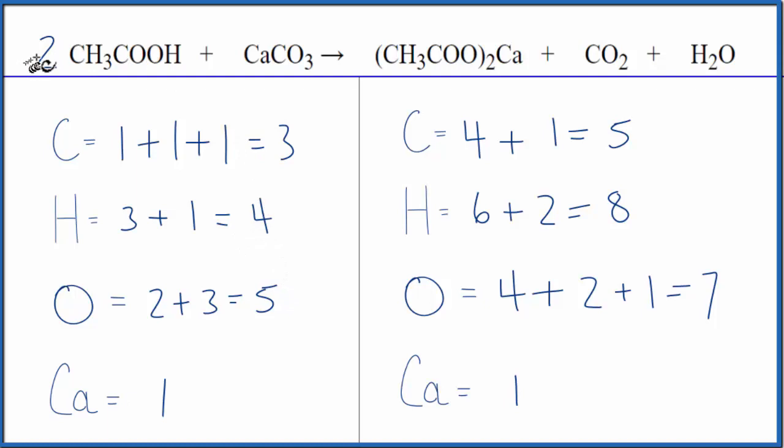So if we put a two here, we have to update all this information again. So now we have one, two carbons, and this two applies to everything. So two times two is four plus the one carbon here in the calcium carbonate, five. So that's good.